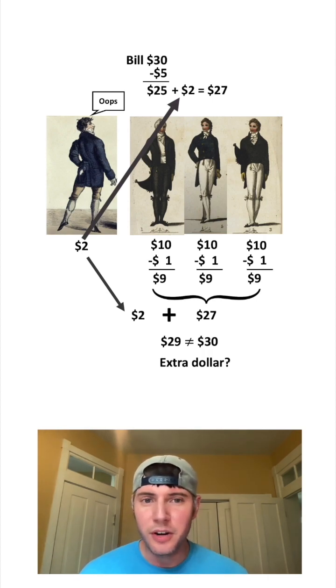Once the $3 is returned to the friends, that means the $27 is the total amount of money spent. $25 of it is in the register, and $2 of it went to the waiter. Everything is accounted for.